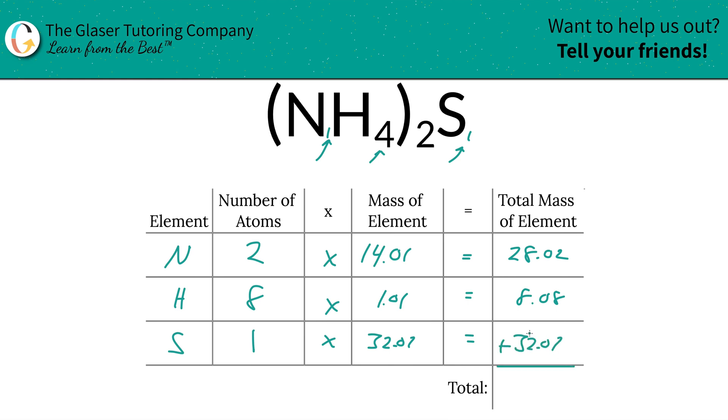And then to find the total mass of the compound, which is what we're interested in, we have to add up this column, and it's as easy as that. So this is going to be 68.17. And the units here are grams per mole, because we're finding molar mass.